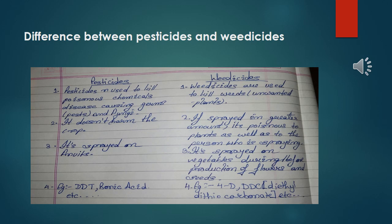Point three for pesticide: it is sprayed on fruits also. Point three for weedicide: it is sprayed on vegetables before production of flowers and seeds. Examples of pesticides are DDT, boric acid, etc. Examples of weedicides are 2,4-D and DDC (diethyl carbonate), etc.